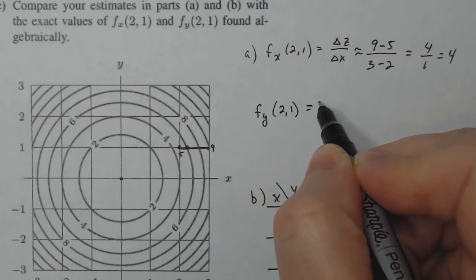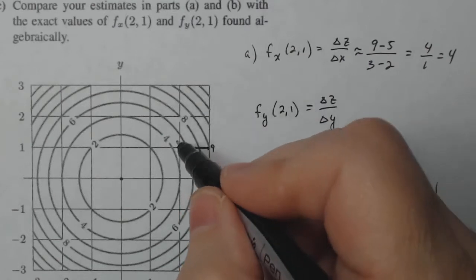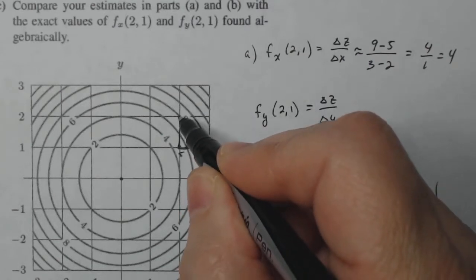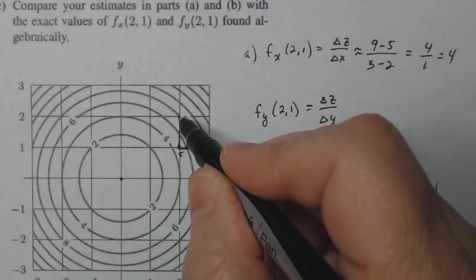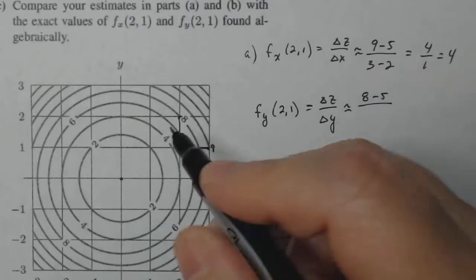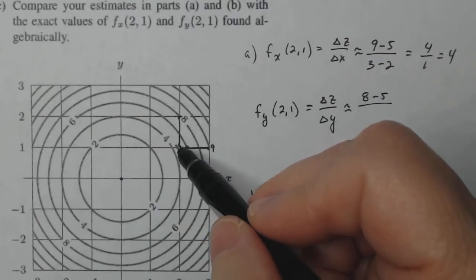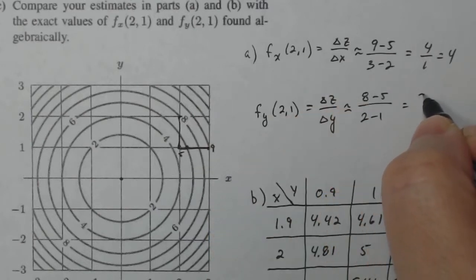So f sub y at two one then is the change in Z over the change in Y. So now I'm moving a whole this direction. So my Z values go from five to eight, it looks like. So my change in Z is going to be eight minus five, and my change in Y is going to go from one to two. So that's one. So I get three over one, which is three.